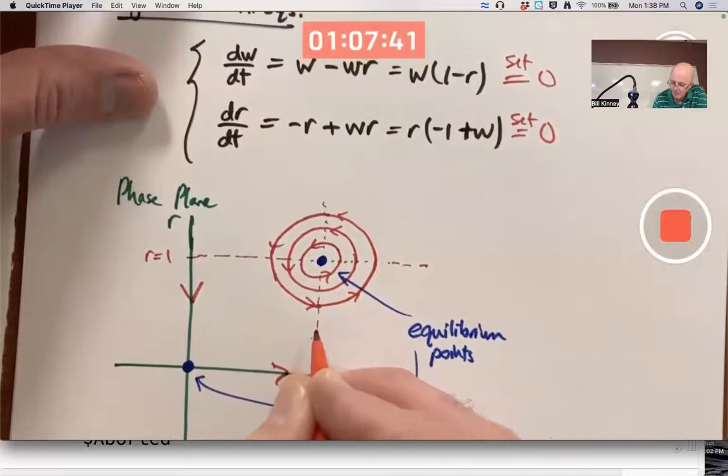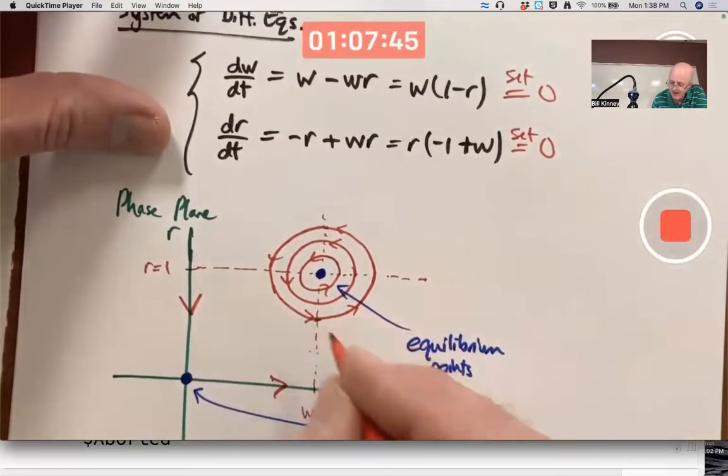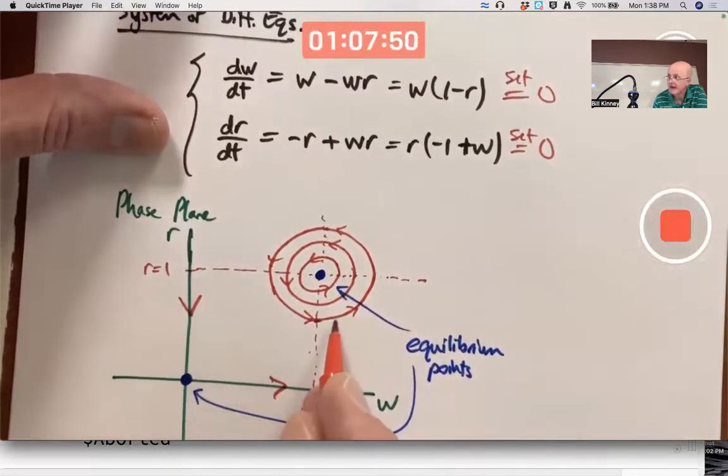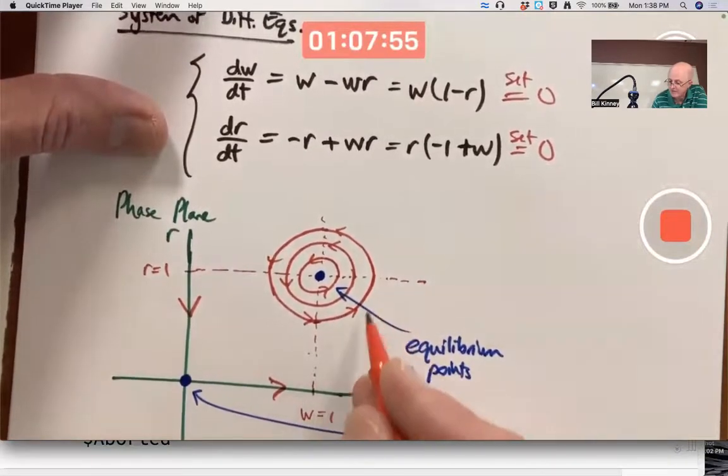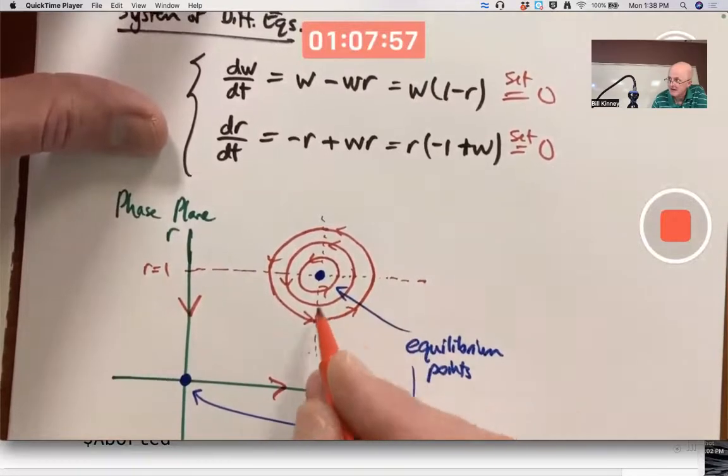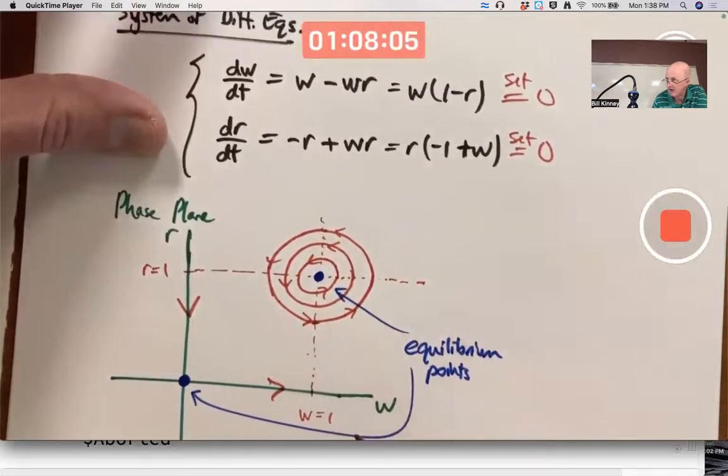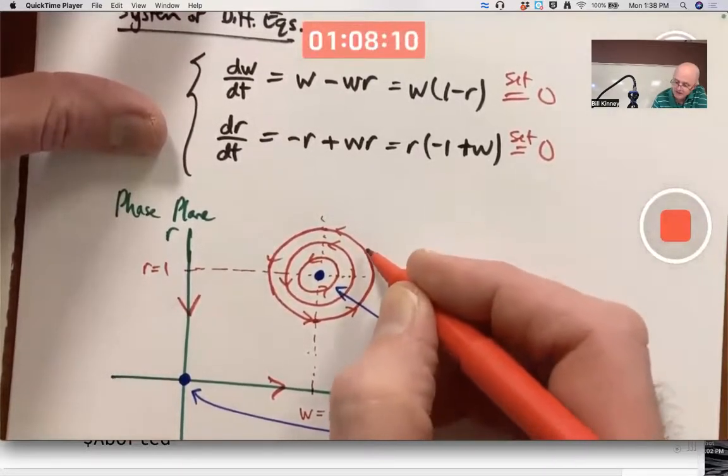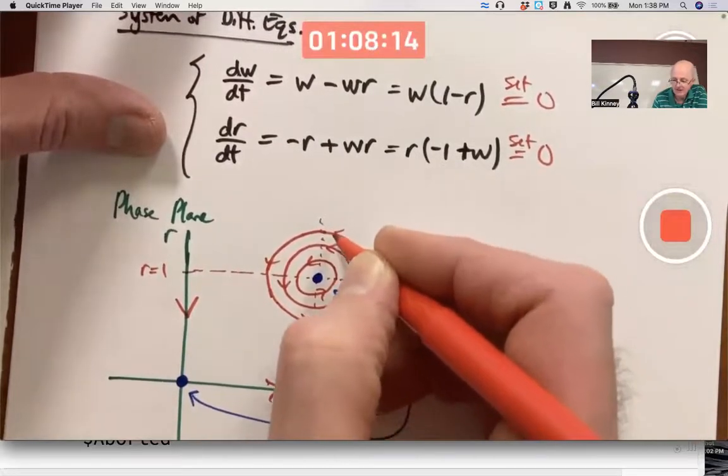And when you cross this nullcline here where W is 1, that's an R nullcline. At that moment in time, the rate of change of the robin population with respect to T is 0. It's bottoming out before it starts increasing now. When you're over here, there's lots of worms and not a ton of robins yet. So the robin population is increasing. The worm population is still increasing as well. But once you get to this point, there's so many robins that now the worm population starts decreasing.